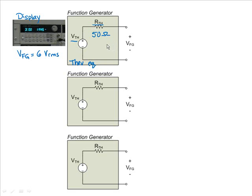Since the function generator is not an ideal source, the output will depend on the load that is connected to the output. Let's look at a couple of cases. In this first case, let's assume the output is an open circuit. Since there's no current going into that circuit, the output voltage VFG would just be equal to the Thevenin voltage VTH.